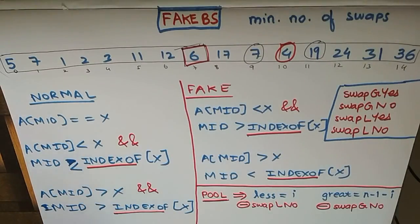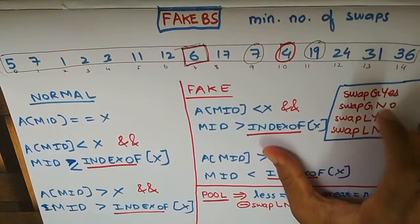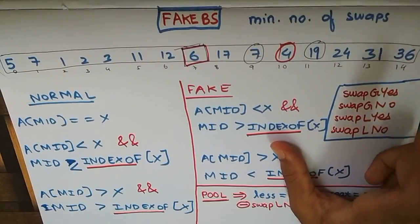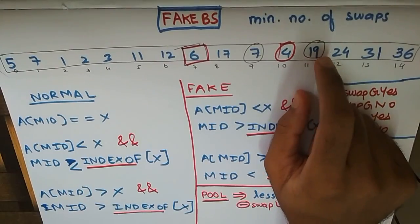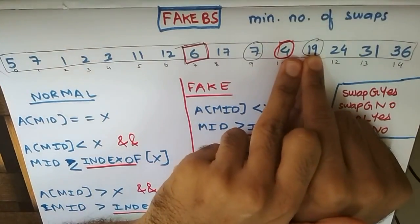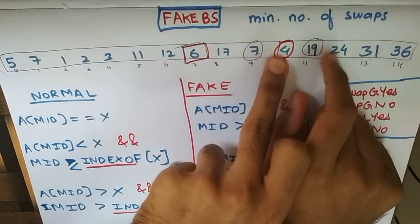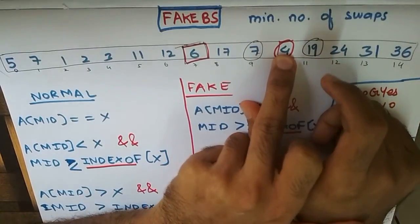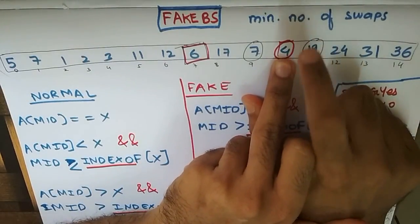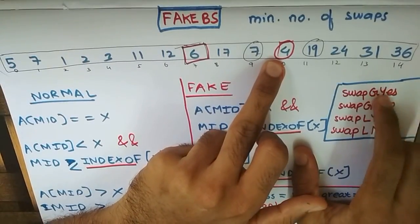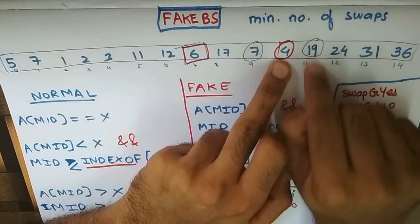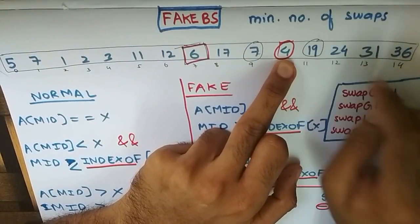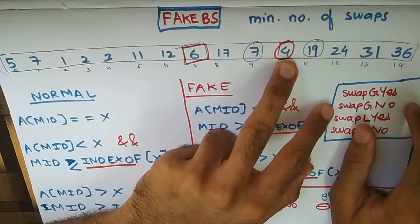To solve this problem, the crux can be addressed using four variables: swap_greater_yes, swap_greater_no, swap_less_yes, and swap_less_no. swap_greater_yes is a counter for cases where we need to replace an element with a number greater than the target x. swap_greater_no tracks cases where the element is already greater than x and no swap is needed — for example when we already had 19, it's already there.